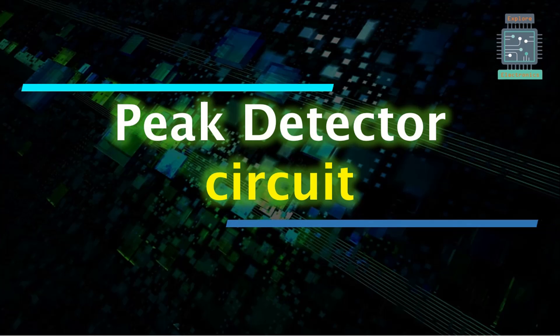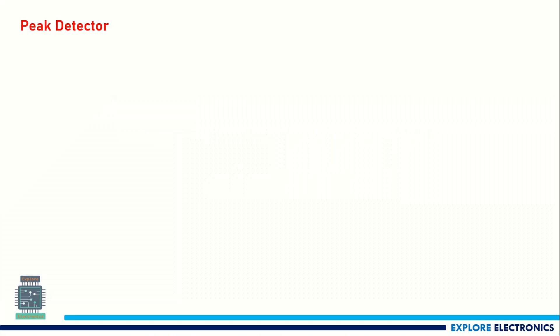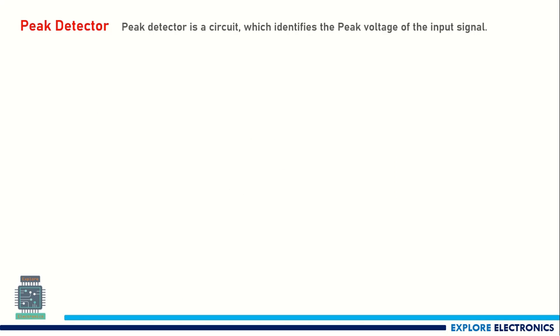Hello everyone. In this video let us understand the peak detector circuit. A peak detector is a circuit which identifies the peak voltage of the input signal.